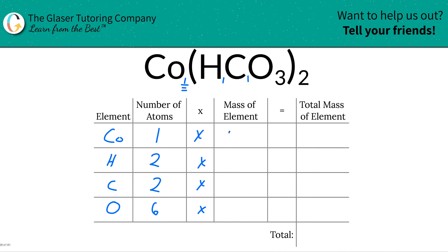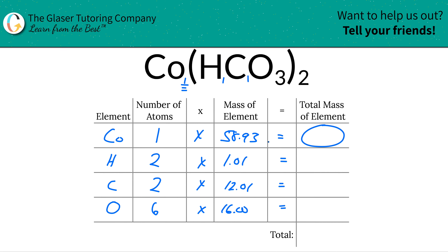So let's write them down: 58.93 for cobalt, hydrogen was 1.01, carbon is 12.01, and oxygen was 16. To find the total mass of each element in the compound, simply multiply across the row. This is the mass of one cobalt, and since I only have one cobalt, I take one times the mass, which gives us 58.93.